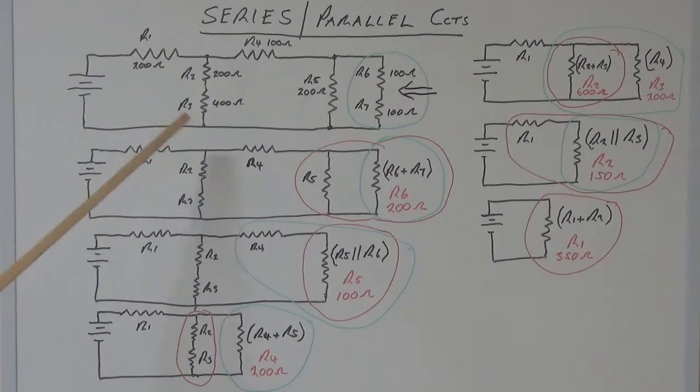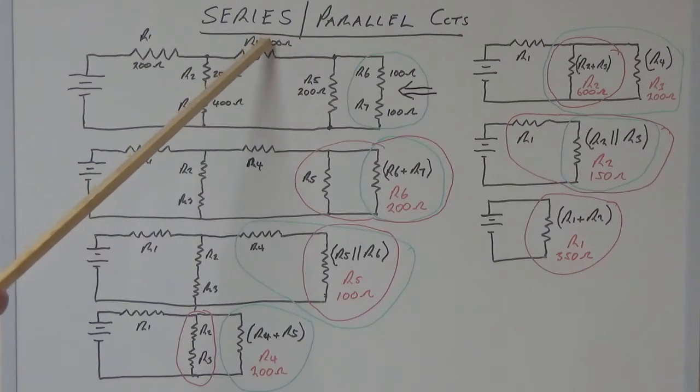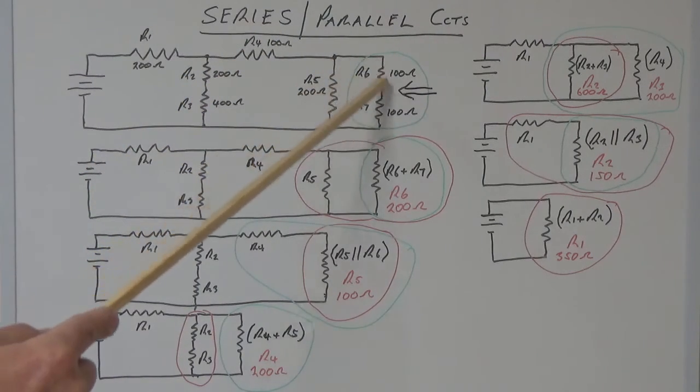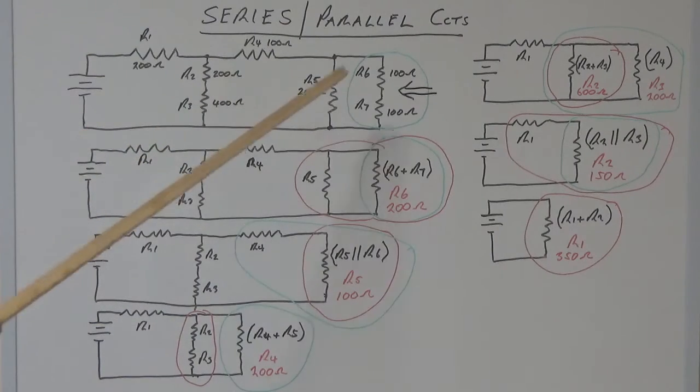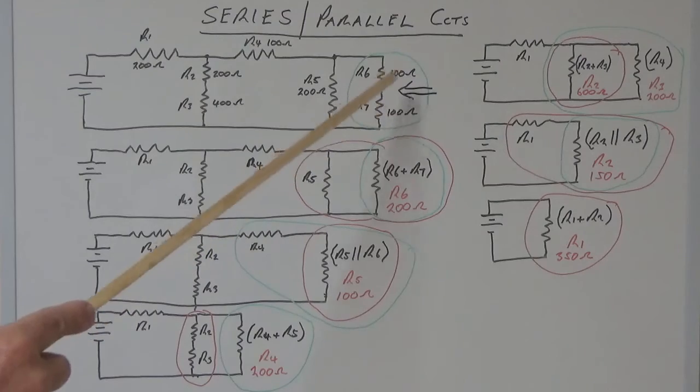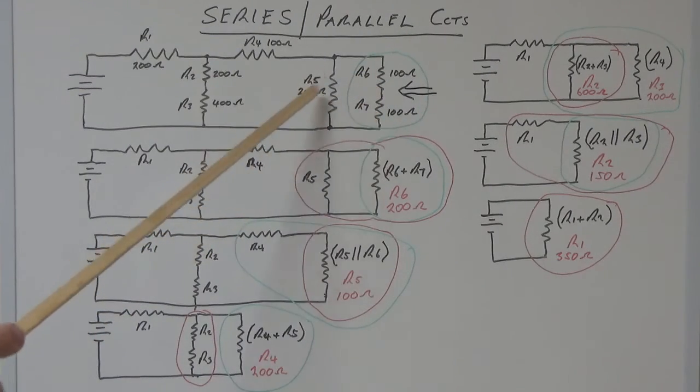But in doing that, you can then calculate the voltage drop here, you can then calculate your currents running through this branch, you're going to have another voltage drop here, and then currents running through these two branches as well. So you can calculate voltage, current, and finally power for this entire circuit and for each of the individual resistors in that circuit.